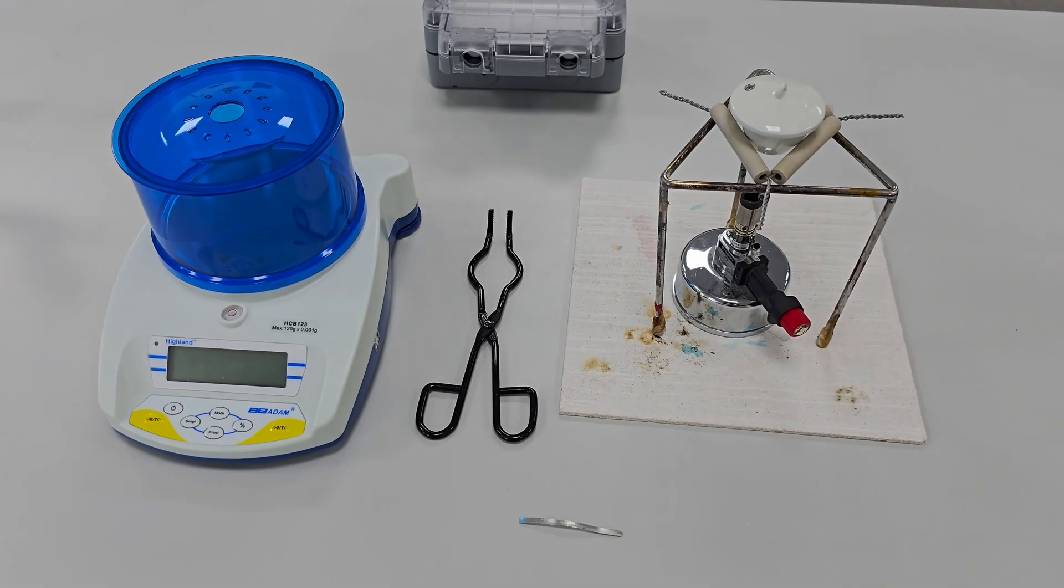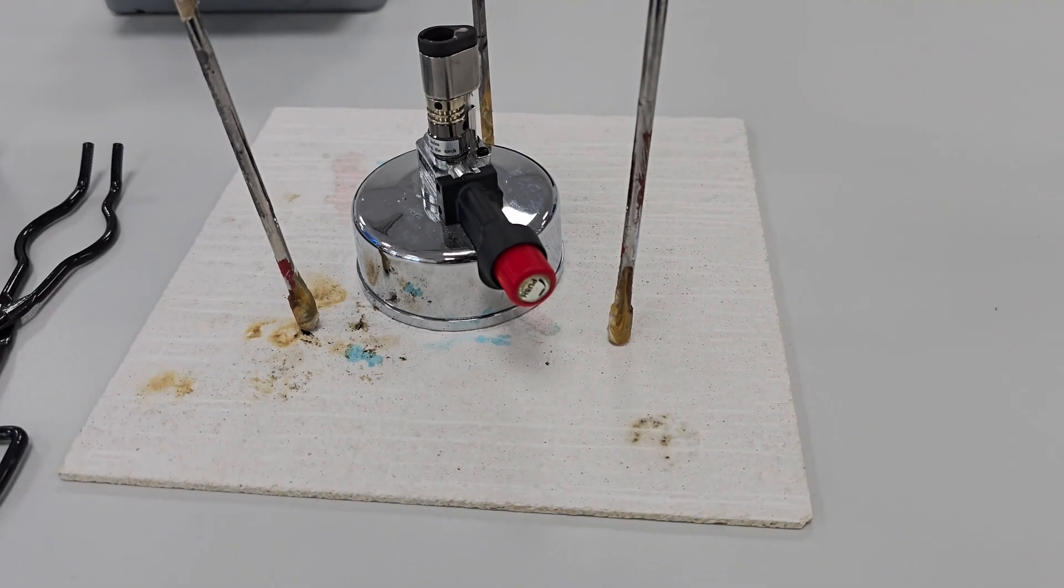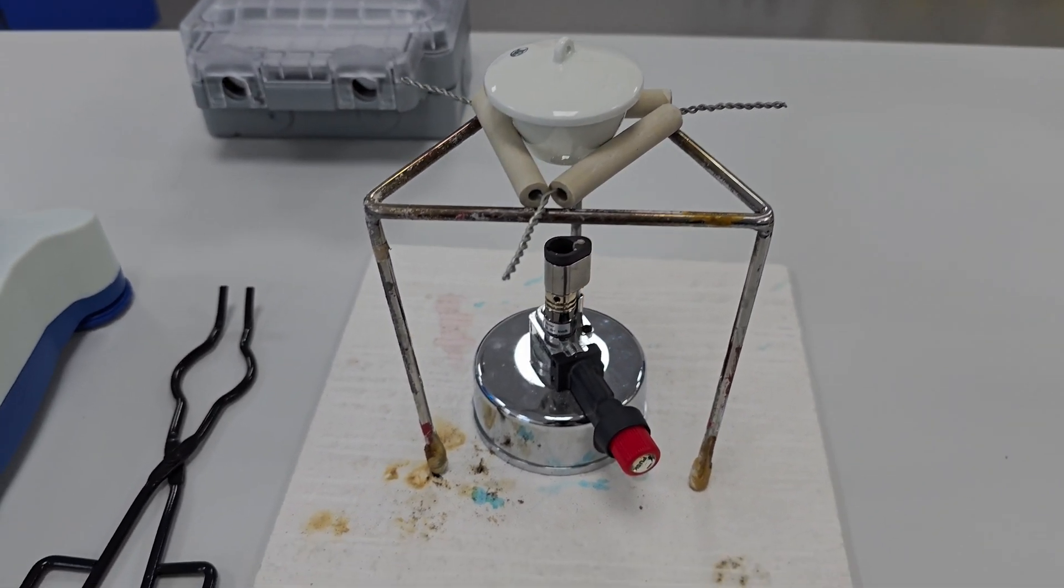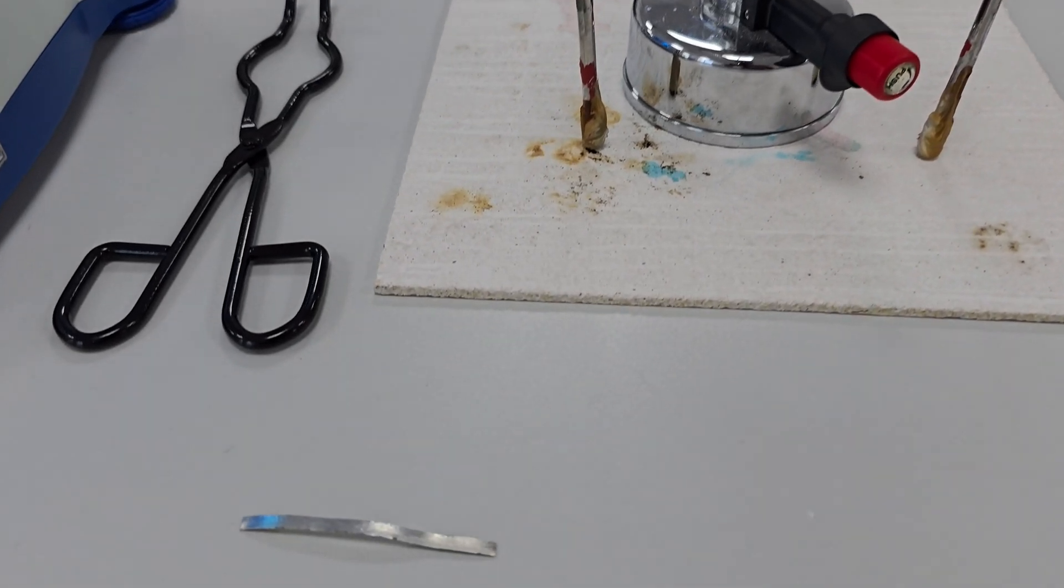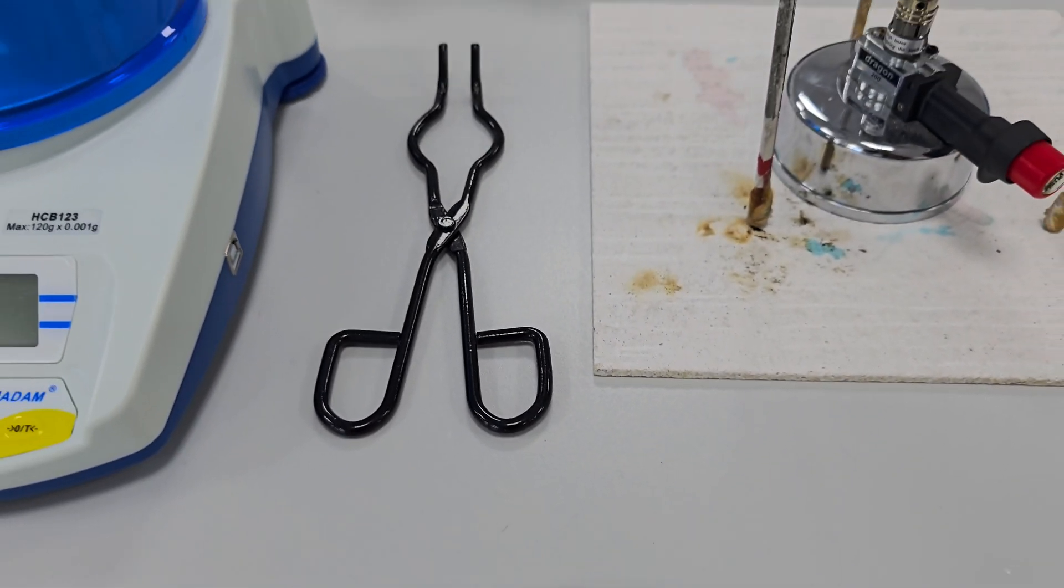I'm going to show you how to experimentally determine the empirical formula of magnesium oxide using a simple combustion experiment. We'll use a six centimeter strip of magnesium ribbon, a crucible, some heat and a little bit of chemistry to find out exactly how magnesium combines with oxygen.